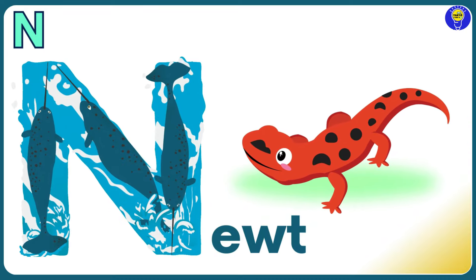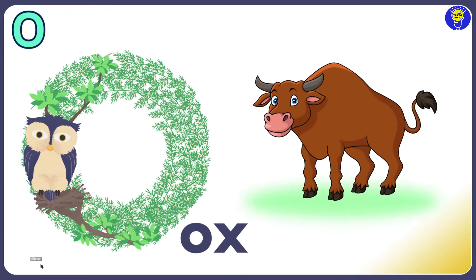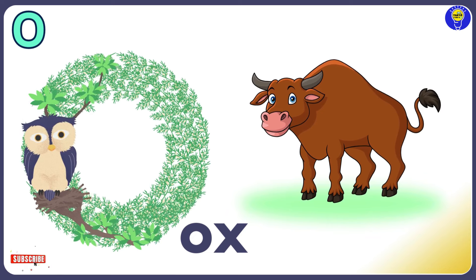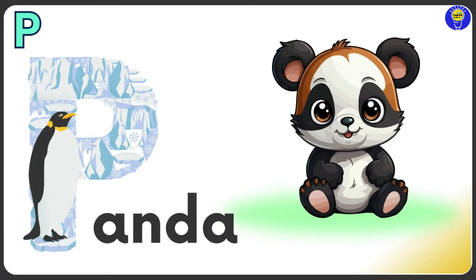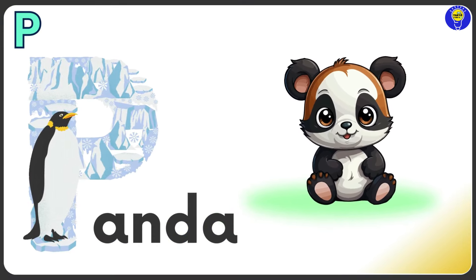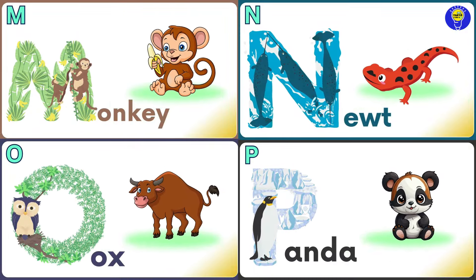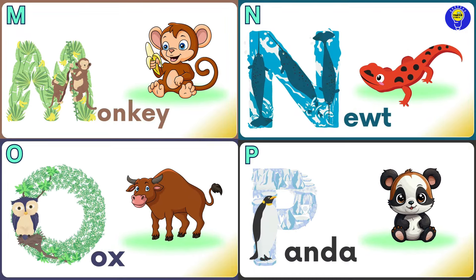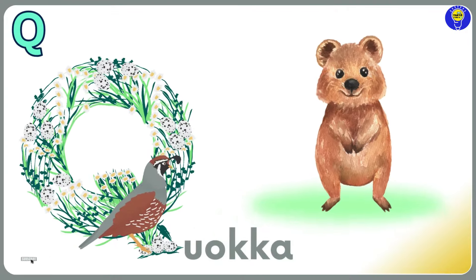N is for Newt. N, N, Newt. O is for Ox. O, O, Ox. P is for Panda. P, P, Panda.